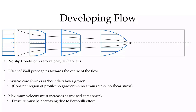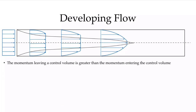If we think about Bernoulli, the flow in this inviscid core is accelerating, and therefore the pressure must be decreasing. Additionally, the momentum leaving a control volume is greater than the momentum entering. If I integrate the momentum across the downstream profile, it's greater than across the upstream profile. The momentum leaving is larger in the developing flow region, and therefore the pressure must be lower in order to compensate.